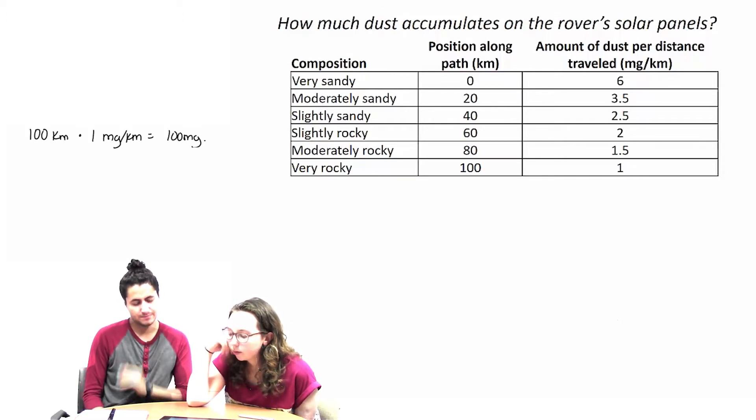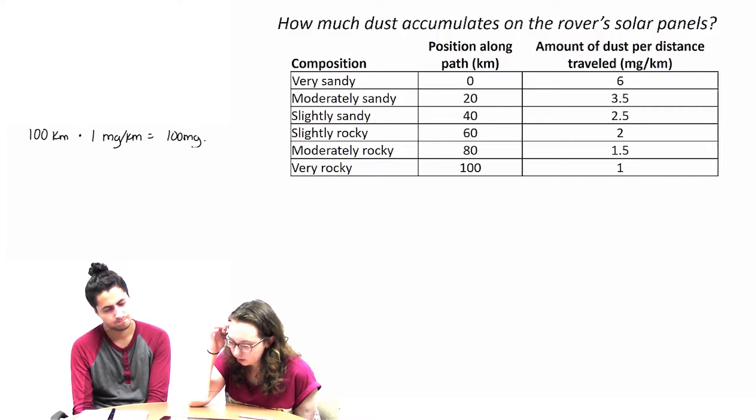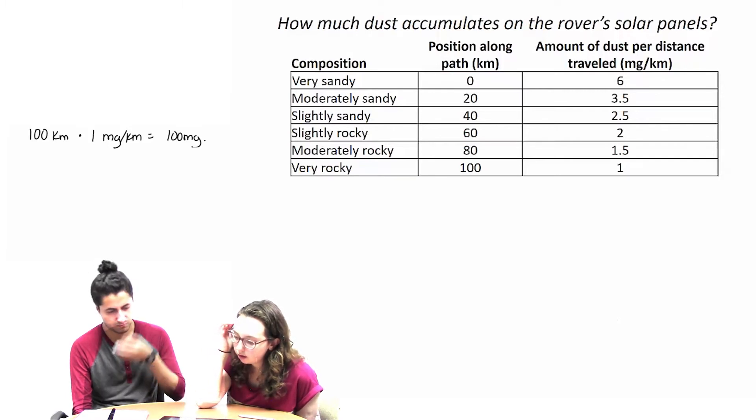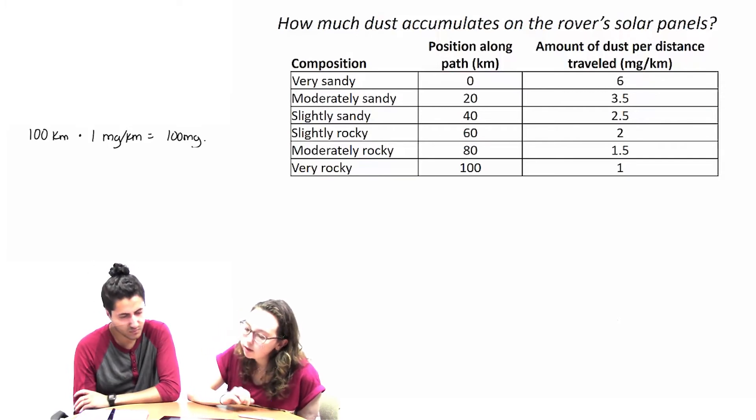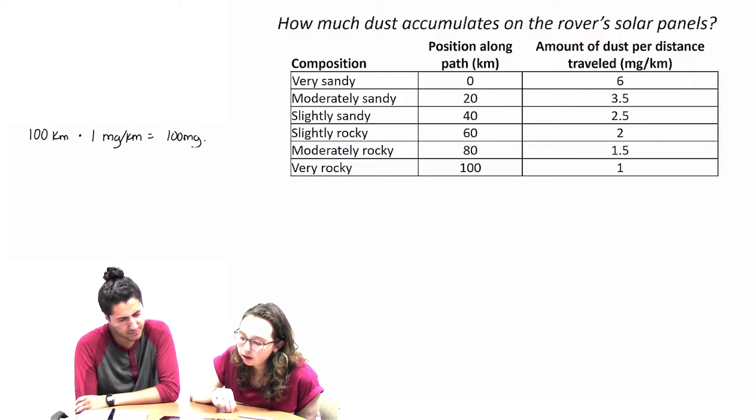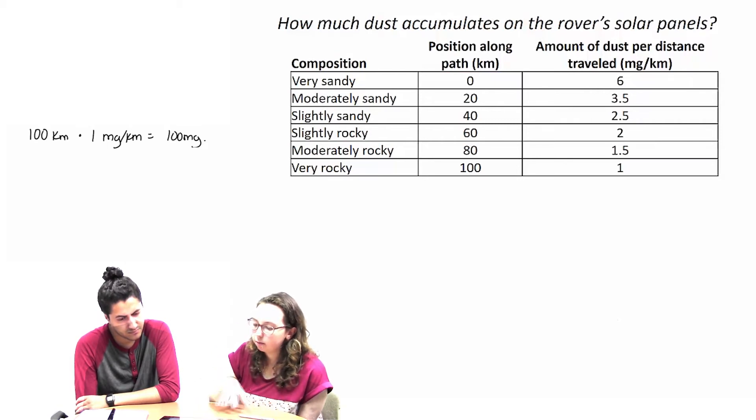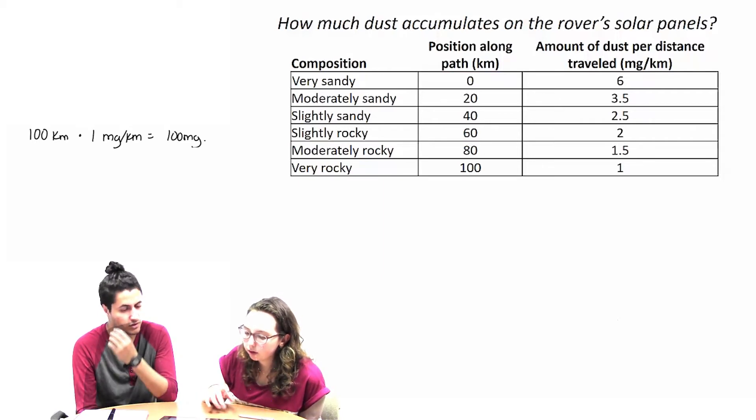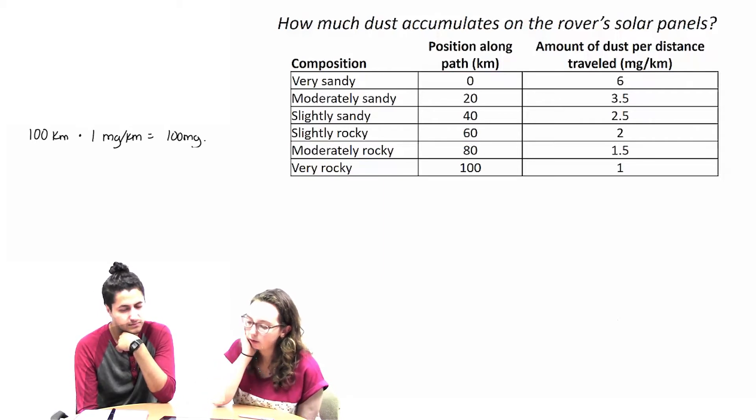I think you're right. So I think we need to, because we do travel 100 kilometers, but we need to incorporate the other rates as well. Yeah. Maybe add them and then multiply that by the 100 so that we can get our milligrams.